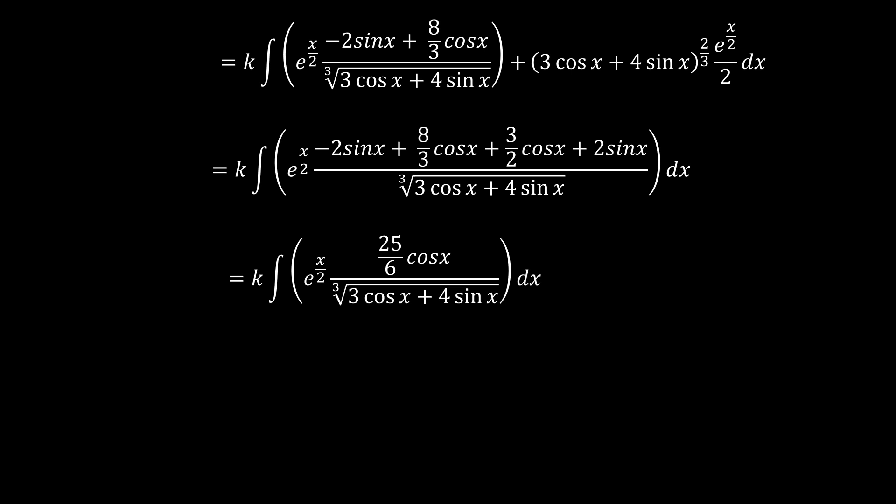Now, we see that we have this constant 25 over 6 that needs to be negated so that the left-hand and the right-hand should be equal. And that is when k equals to 6 over 25. So when k is equal to 6 over 25, both the left-hand and the right-hand side are equal.